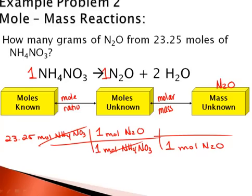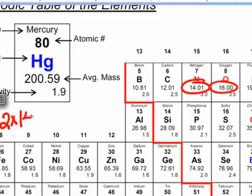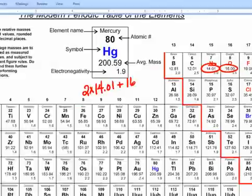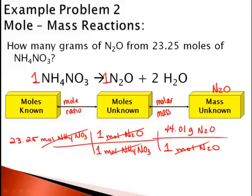Molar mass is always compared to one mole. Here we see the mass of nitrogen and the mass of oxygen: 2 times 14.01 plus 16. So the molar mass of N2O is 44.01 grams of N2O. Moles of N2O cancel out and we're left with grams, which is the mass of what we wanted. So we take 23.25 times 1 divided by 1, times 44.01, and we get 1023.2325.